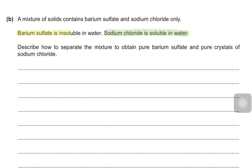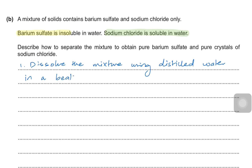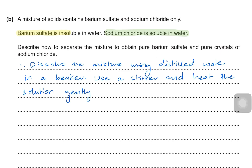The first thing you will do is dissolve the mixture using distilled water in a beaker, because you have a solid mixture and you can't pick individual particles. While you talk about dissolving, mention using a stirrer and heat the solution gently so that all sodium chloride is dissolved.